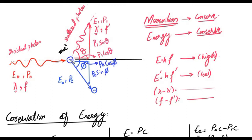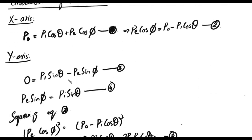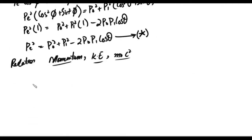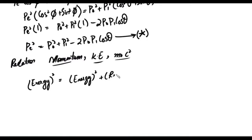After the collision, the electron gains kinetic energy, so it has kinetic energy and momentum, plus its rest mass. The relativistic energy relation connects total energy to momentum and rest mass energy. The total energy equals momentum-related energy plus rest mass energy m₀c², so the full energy equation involves: E² = (pc)² + (m₀c²)².